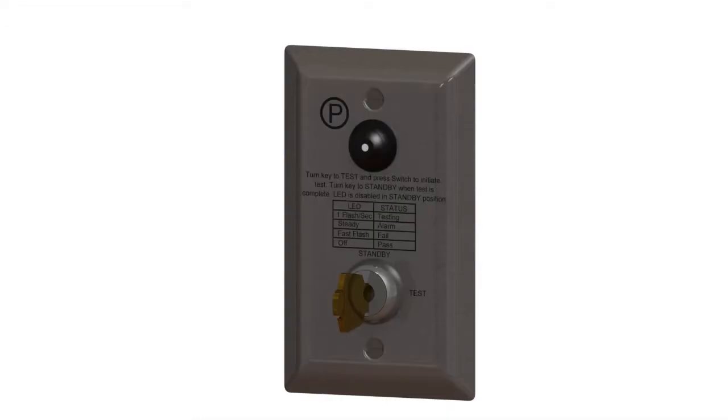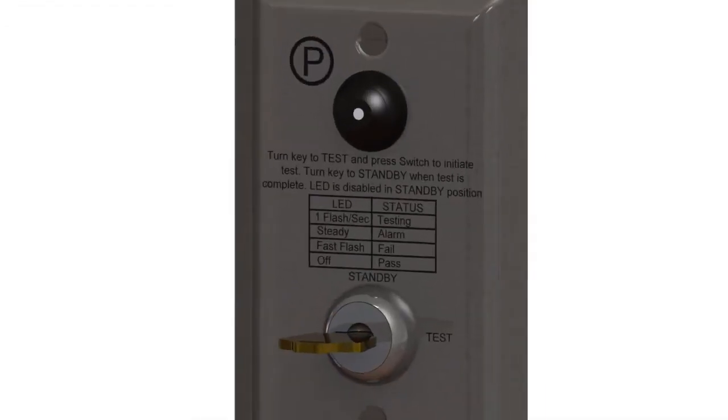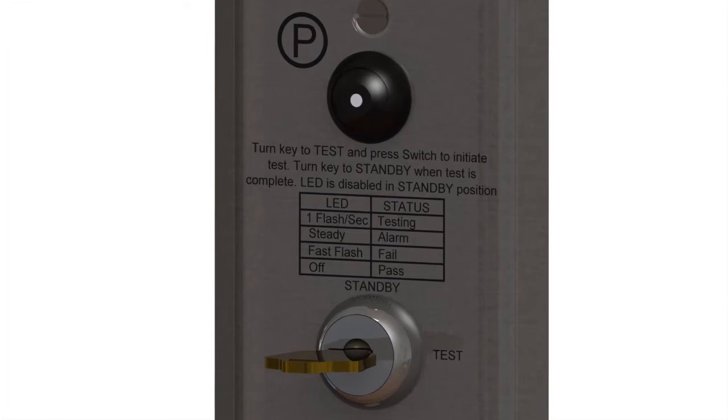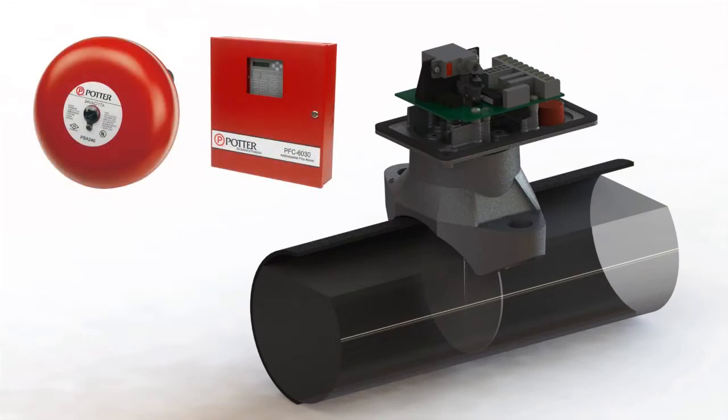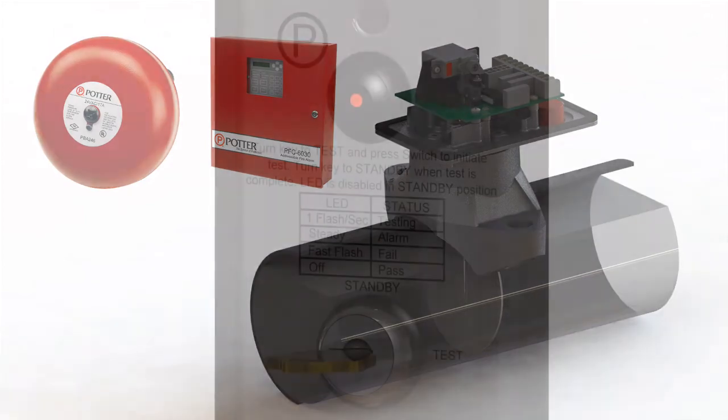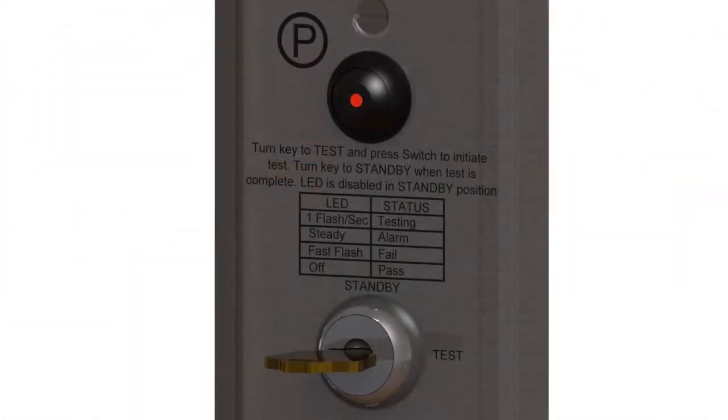The auto test feature is initiated by turning the key on the ATC test switch and then pressing the button. After a successful test, the VSRAT will go into alarm for a few seconds to activate the local notification appliance as well as the fire alarm panel. The LED on the test switch would go out.